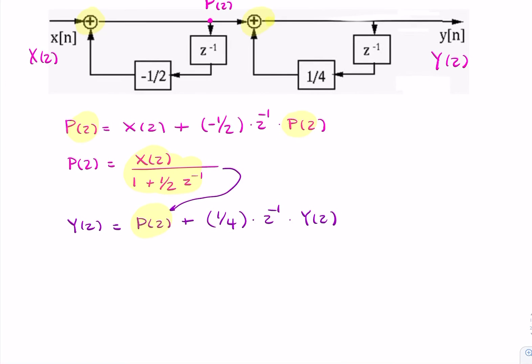So I can say that y(z) is equal to x(z) over 1 plus half z to the minus 1 plus a quarter z to the minus 1 times y(z).